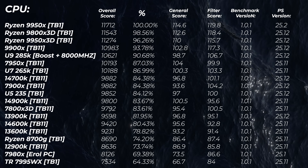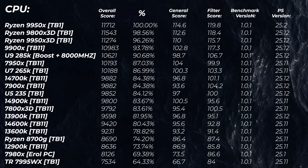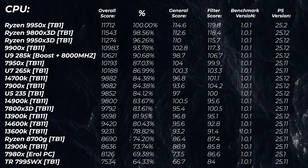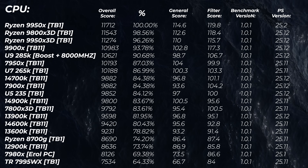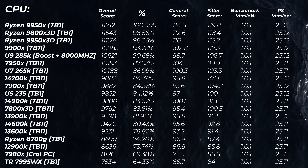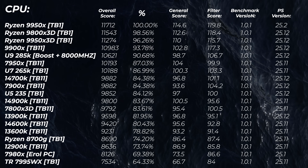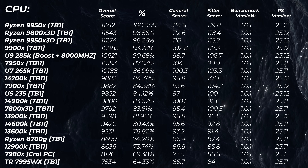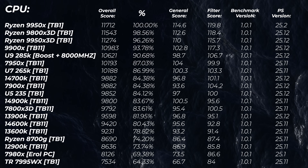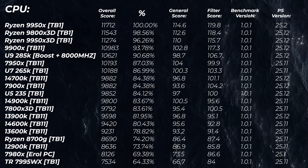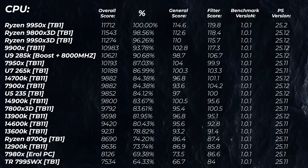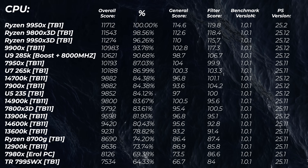Now let's talk about the actual benchmarks. On screen you can see 19 CPUs tested. The first column shows the overall score, consisting of a general score and filter score. Then you can see percentage differences showing how much better each CPU is relative to others. Benchmark and Photoshop versions are also shown — confirming the same testing environment for everything. I'm leaving the test bench setup in the description. Each CPU is tested with its stock IMC settings — not the same RAM speed for everything — so different CPU generations will have different RAM speeds.